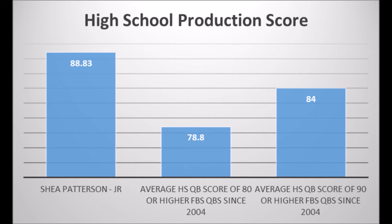The average high school production score of an 80th percentile FBS quarterback — meaning quarterbacks that scored in the 80th or 90th percentile of production at the FBS level, measured by touchdown-to-interception ratio compared to peers, completion percentage compared to peers, and strength of schedule — indicates that Shea Patterson shares the same traits of a quarterback who could potentially hit an 80th or 90th percentile year. This means there's a very good shot he could end up being an above-average, or even high-end, quarterback at the college level. The question marks have been his college production up to this point.